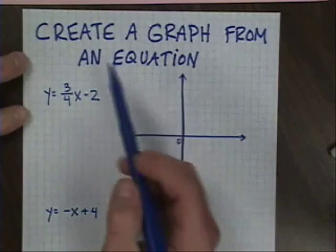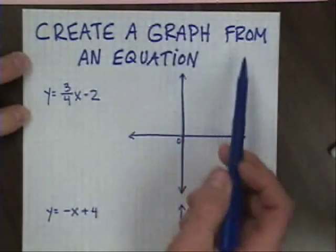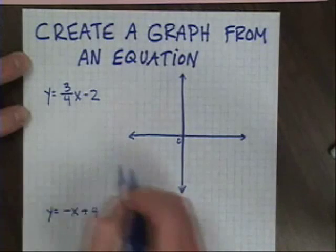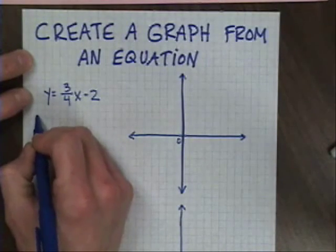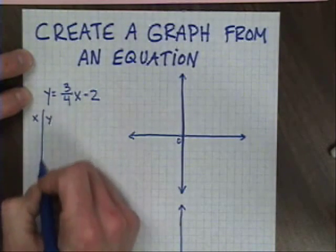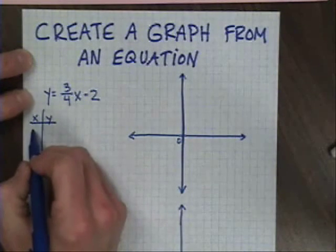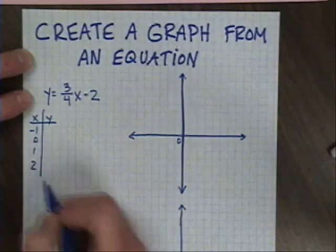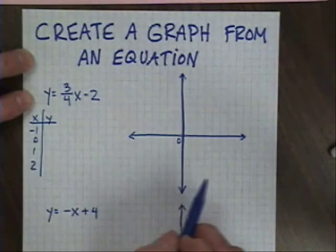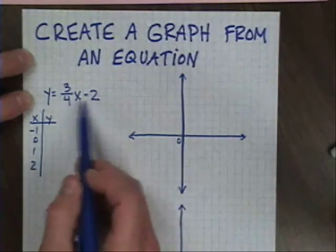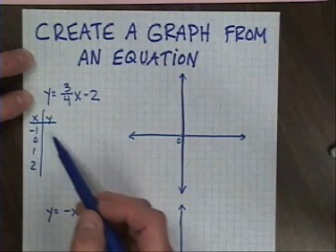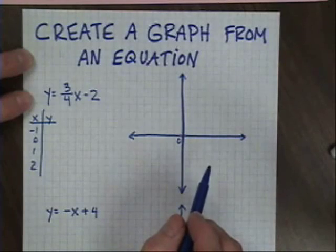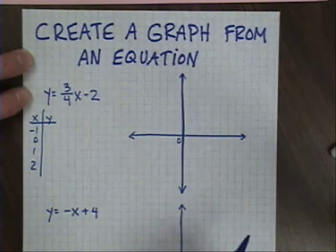In this next video in the series, we're going to talk about creating a graph from an equation. We've done this in the past by using an XY table. Typically, we would start out with an XY t-chart, choose some numbers for x — maybe a negative 1, a 0, a 1, and maybe a 2 — substitute those numbers in, use the order of operations, calculate y, and then graph the four points connected with a straight line. That's a lot of work, but it is an effective way to do it.